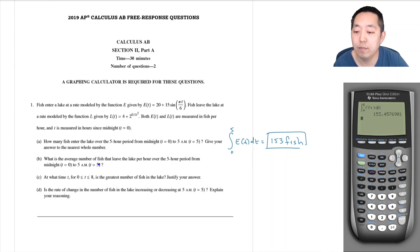All right, part B. What is the average number of fish that leave the lake per hour? The average value for leaving is one over five, integral from zero to five, L(t) dt.